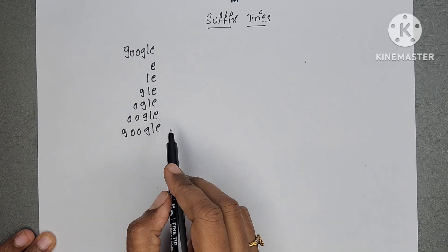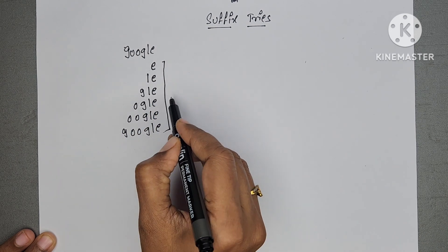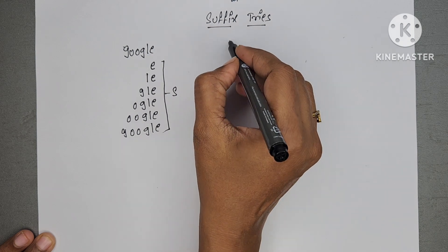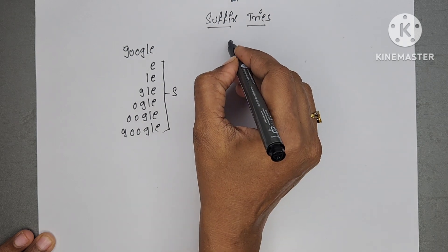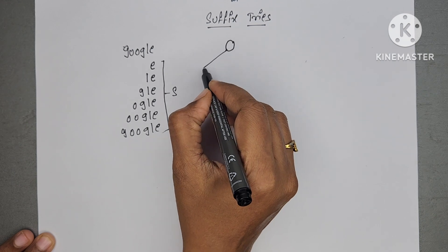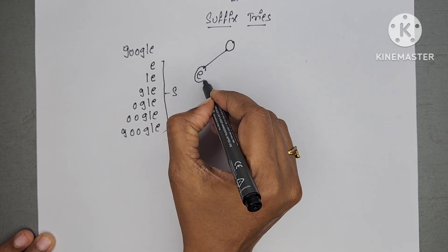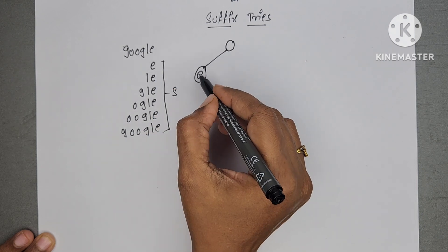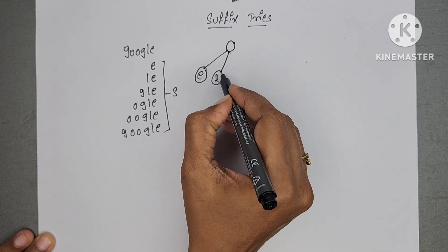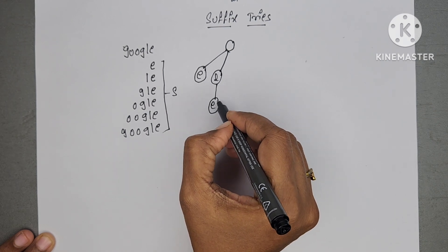To construct a compressed trie, first of all we have to construct a standard trie. All these suffixes are like a set of strings, set S. I am going to construct a standard trie. Always the root is empty. The first string is E — there is only one character in standard trie. For every node, we have to assign only one character. The next string is L and E.